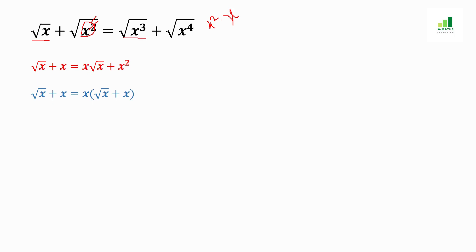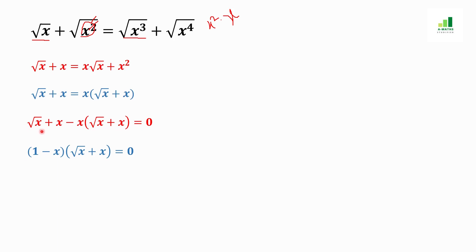In the next step, we take common x from the left side expression and get x times (under root x plus x). This value moves to the other side of the equation and becomes minus x times (under root x plus x) equals zero. We then take (under root x plus x) as a common factor from the whole expression, leaving a remainder of one from the first term and x from the second.